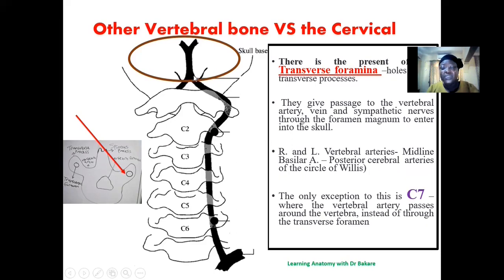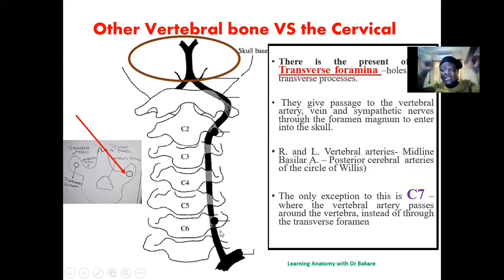The vertebral arteries go up, enter into the foramen magnum — the largest foramen of the neurocranium, located in the region of the occipital bone — and become the basilar artery. The basilar artery further divides into the posterior cerebral artery, which forms the posterior branches of the Circle of Willis. The Circle of Willis is the major blood supply to the brain contained within the cranium.